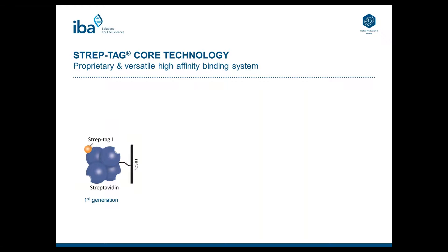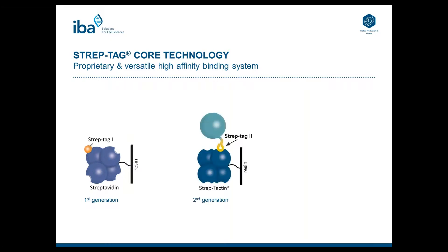The StrapTag system is based on the biotin-streptavidin interaction, which is one of the strongest non-covalent interactions in nature. Based on this system, a peptide was engineered which binds to the biotin binding pocket of Streptavidin with high affinity, and it was named Streptag1. Unfortunately, this peptide could only be used at the C-terminus of a recombinant protein. Therefore, it was systematically optimized and then called Streptag2.